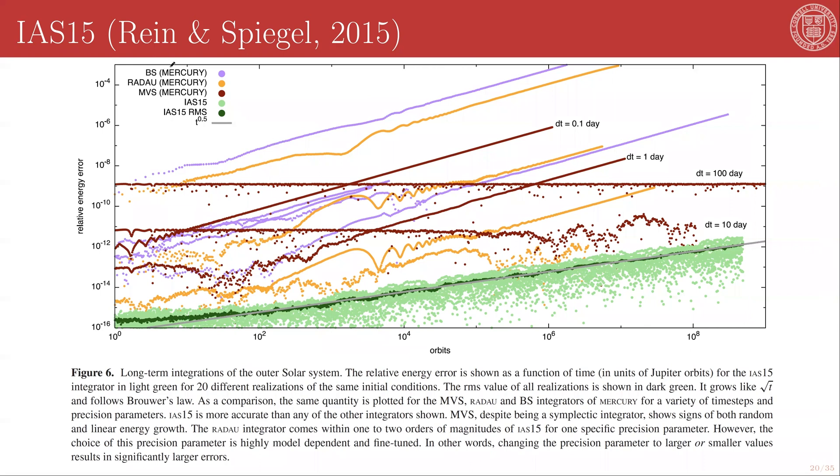And this features the Bulirsch-Stoer, a Radau scheme that is in Mercury, and the mixed variable symplectic integrator that is in Mercury. You can see that all of these accumulate errors as they go along, but IAS15 significantly outperforms the others, starting with a relative energy error of 10 to the negative 16, in its initial few time steps, which is right down there at the numerical encoding precision of the data type that is being used.